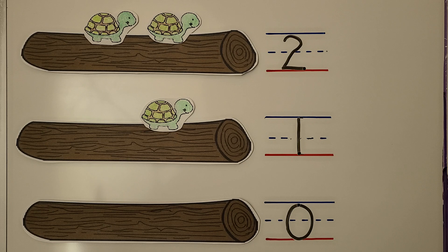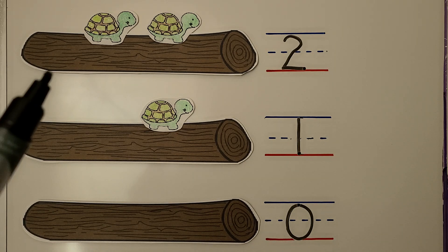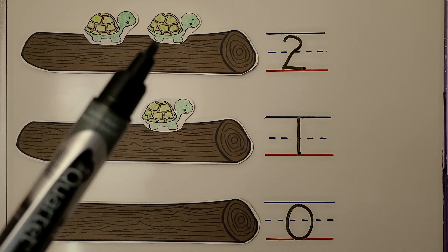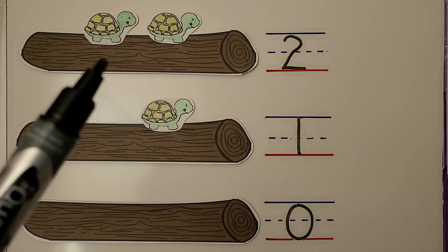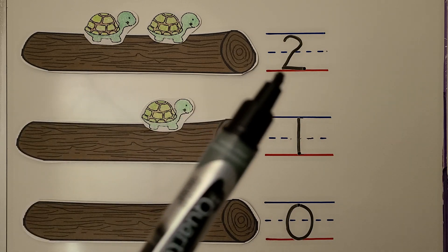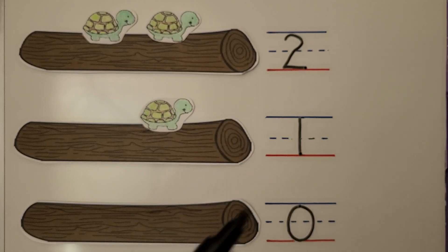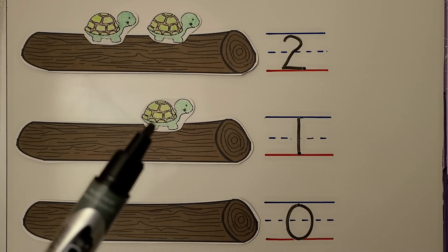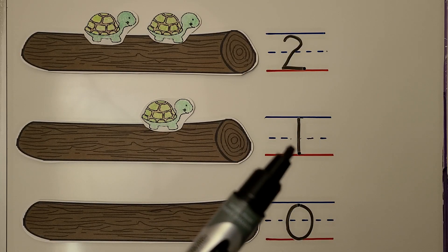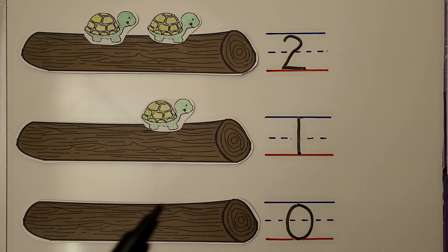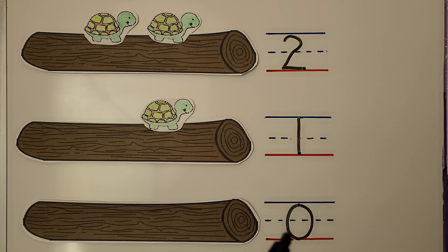Here we have some logs. This log has one, two turtles. Two. This log has one turtle. One. This log has none — there's not any. There are zero turtles.